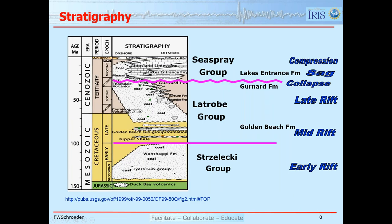To quickly review the lease sale area: we have fluvial to near-shore sands and a major unconformity called the Top Latrobe. The rocks from Late Cretaceous to Middle Eocene are the Latrobe Group, with the sealing Lake Entrance Formation on top. What we're prospecting for is a sub-unconformity trap with rotated fault blocks forming the structures. Part of the mapping in Unit 13 is to map this main unconformity.